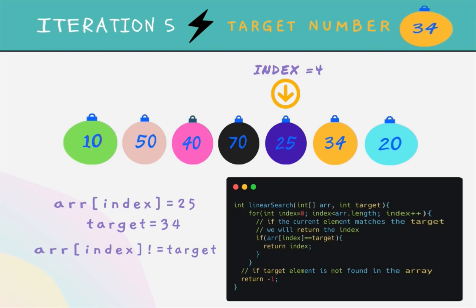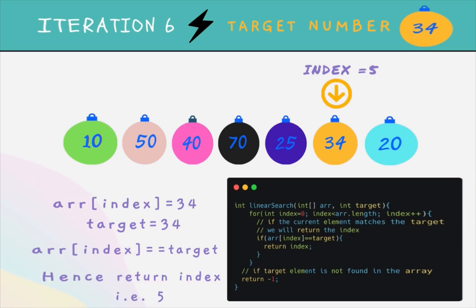The index has become four. Array at index four is equal to 25, which is also not equal to 34, so we increment the index again. Now the index is equal to five, and array at index five is equal to 34, which matches our target. So we return the index of 34, that is five.